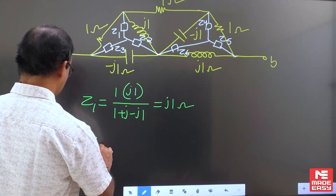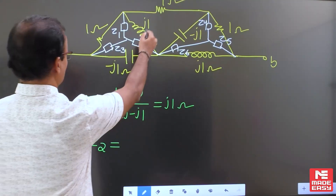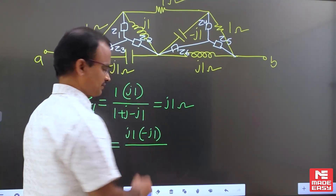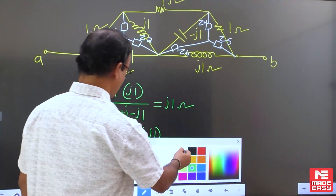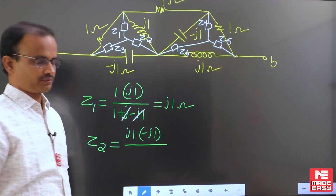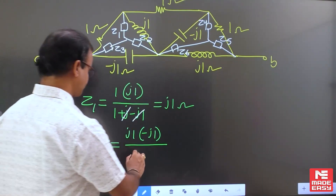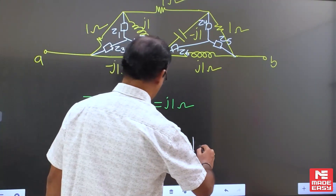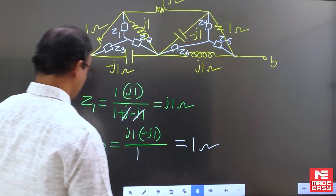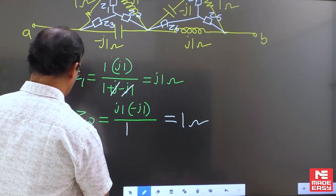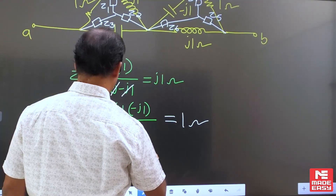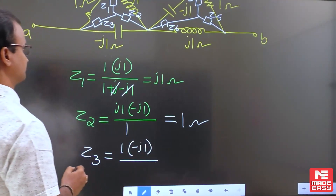Similarly, you can find the Z2 value. Corresponding to Z2, the adjacent sides are J1 and minus J1, with the same denominator as before. If these two terms cancel out, the remaining term is only 1, so the equivalent impedance Z2 is equal to 1. You can convert Z3 similarly: corresponding adjacent sides are 1 and minus J1 divided by total impedance.